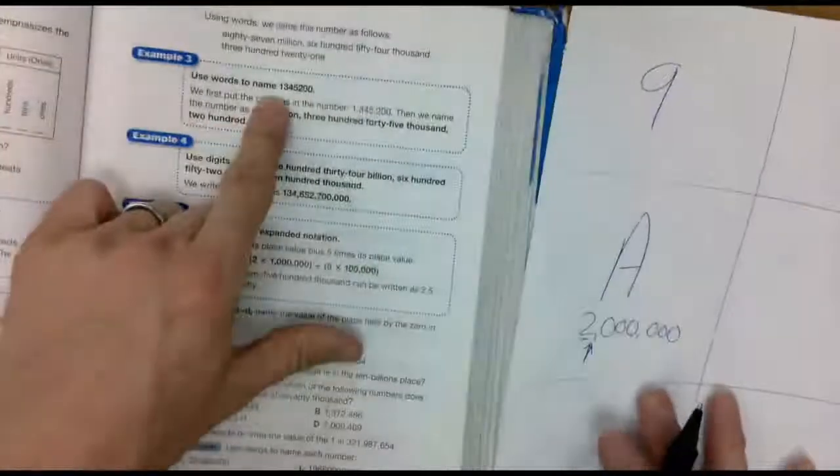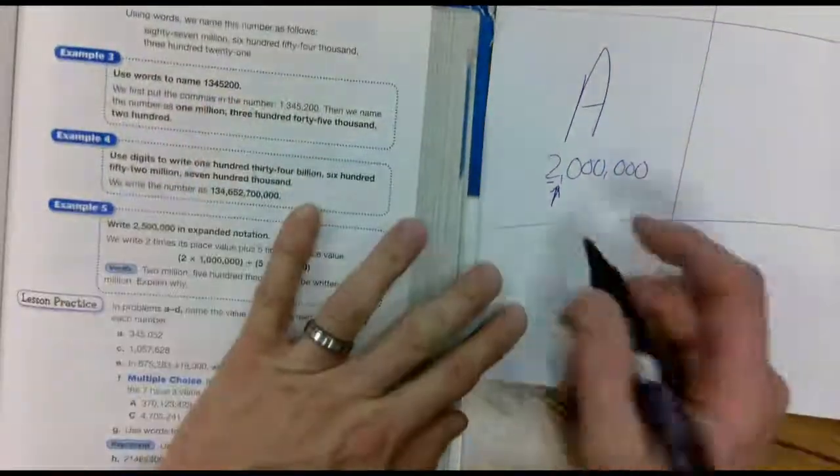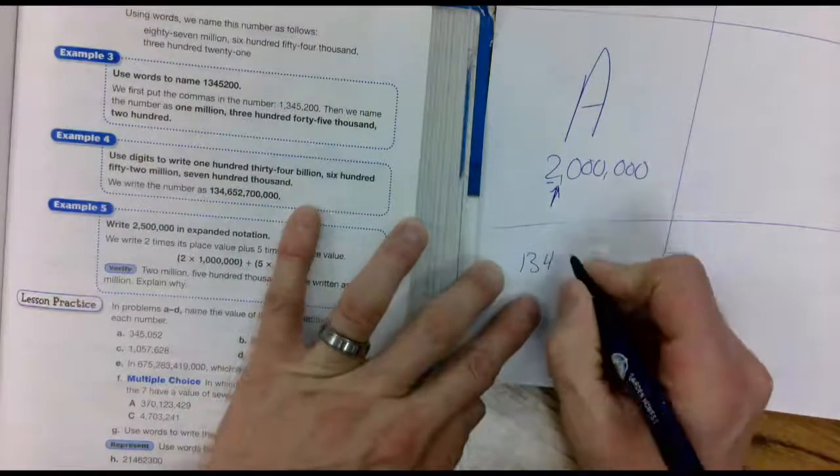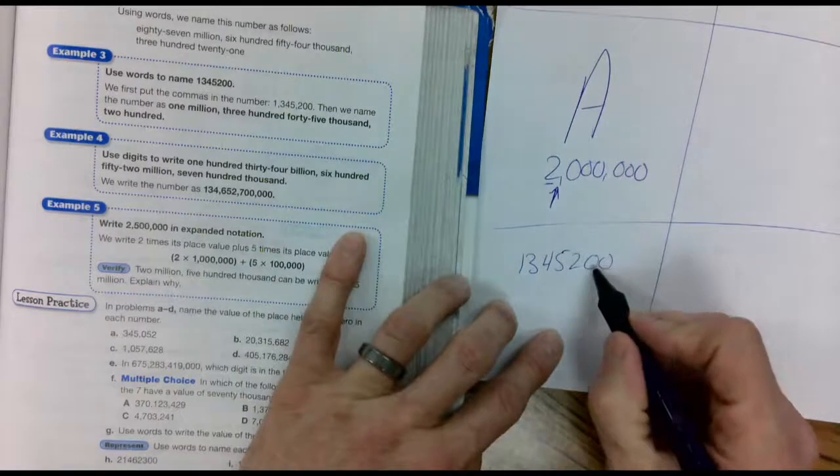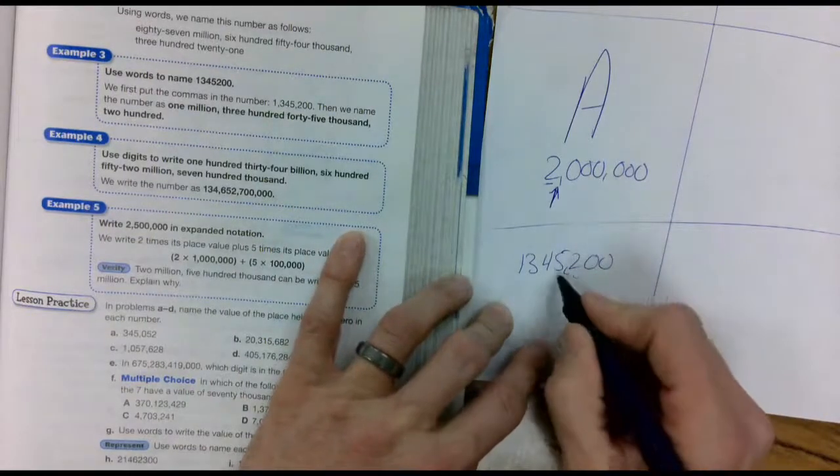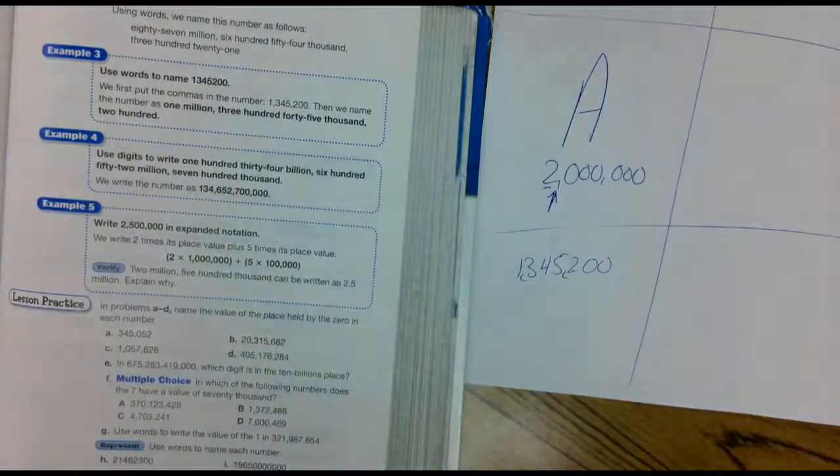Example number three, it says use words to name this. Now I get mad at Saxon that he does this to us. He shouldn't have wrote this number like that. So go ahead and write all those numbers out. And then start over here. One, two, three comma, one, two, three comma. Now it looks like a real number.